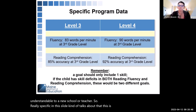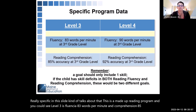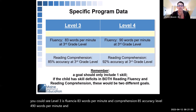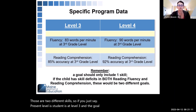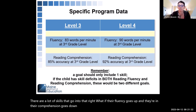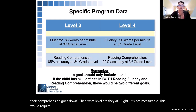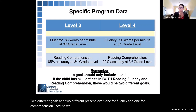This is a made-up reading program. Level three is fluency at 83 words per minute and comprehension at 85% accuracy; level four is 90 words per minute and reading comprehension at 92% accuracy. Those are two different skills. If you just say the present level is 'student is at level three' and the goal is to get to level four, what if their fluency goes up and their comprehension goes down? Then what level are they at? It's not measurable. This would require two different goals and two different present levels — one for fluency and one for comprehension.